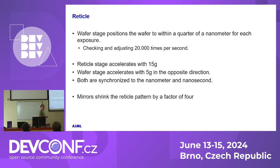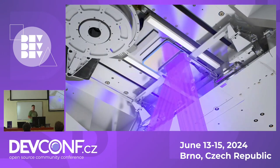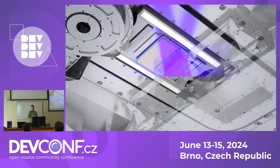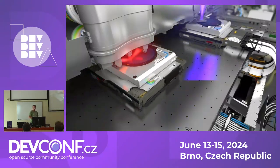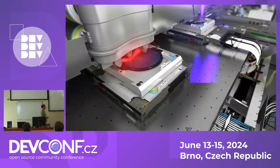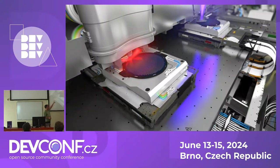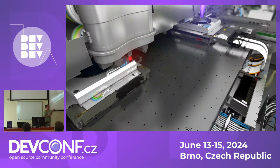At the top we have the reticle stage with the pattern that we want to print, and at the bottom we have the wafer stage. Both of them move at the same time in opposite directions with quite fast speeds, and then they create that pattern layer by layer. Here we see the reticle with the pattern being created, and this is how it looks in the complete machine. We actually have two wafer tables: the first one we use to calibrate the wafer so it's correctly positioned, and then it's switched with the one where we actually print the pattern.